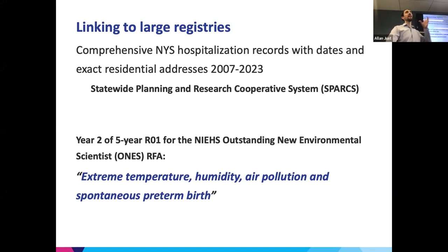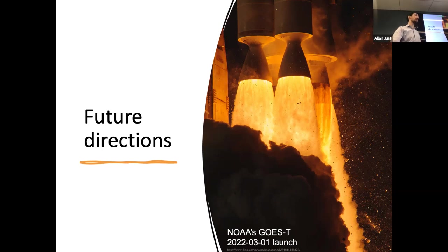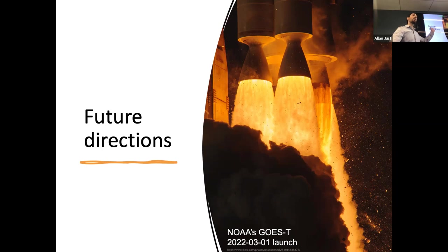Leveraging large spatiotemporal models and existing registries and health datasets is a really powerful approach to figuring out what happened. In future directions, I'm very excited about some of the new satellites coming along. There was a launch from last spring that put up one of the satellites monitoring the West coast, now called GOES-18. This is going to tell us about wildfires and weird weather patterns seen in the West, including long-range transport of lofted aerosols that can come East and influence our air quality on the East coast.